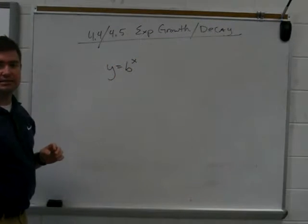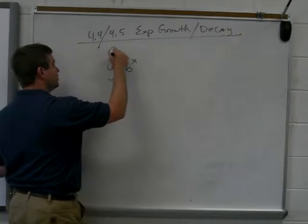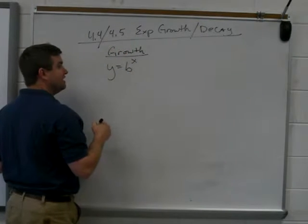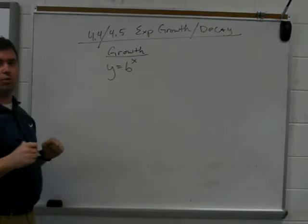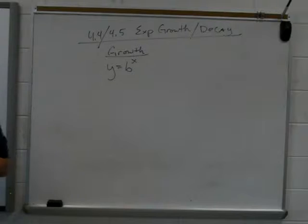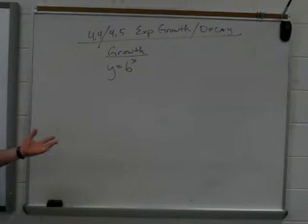Y equals B to the X. First thing we'll do is talk about growth, exponential growth. The definition or the formula is Y equals B to the X. It looks exactly like the decay formula. The only difference are the parameters on B. We're talking about exponential growth. What are the parameters on B?